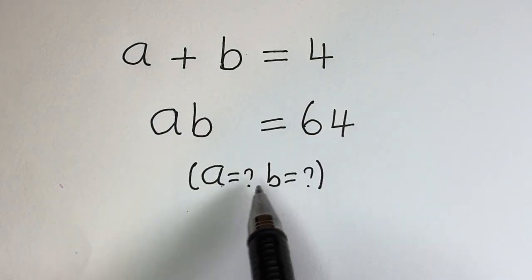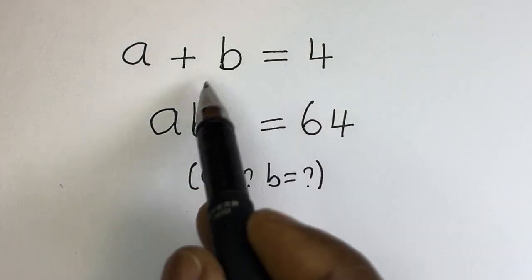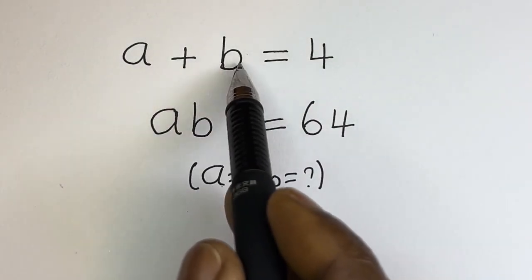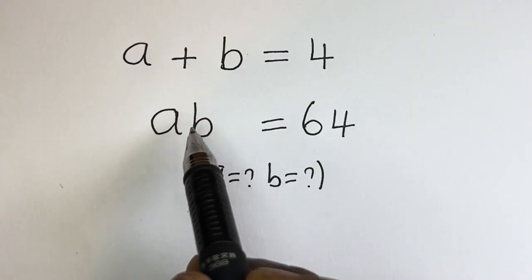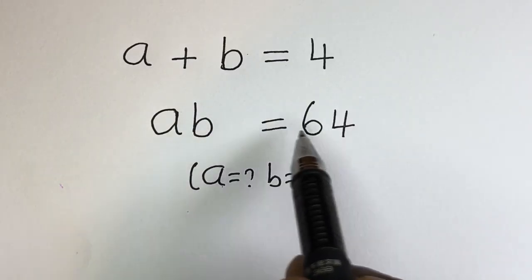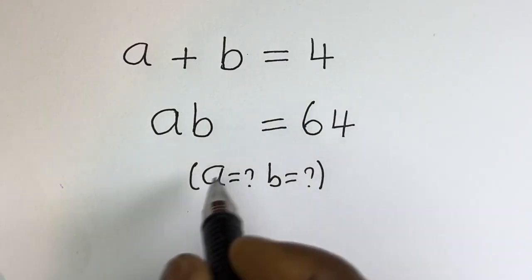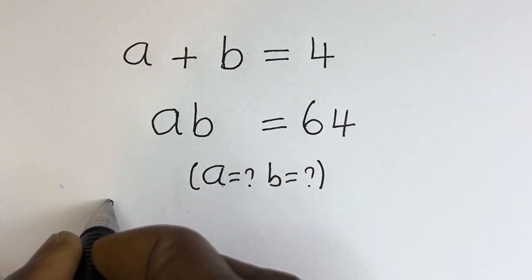Hello, how to solve for A and B in this equation: A plus B is equal to 4, AB is equal to 64. Solution.